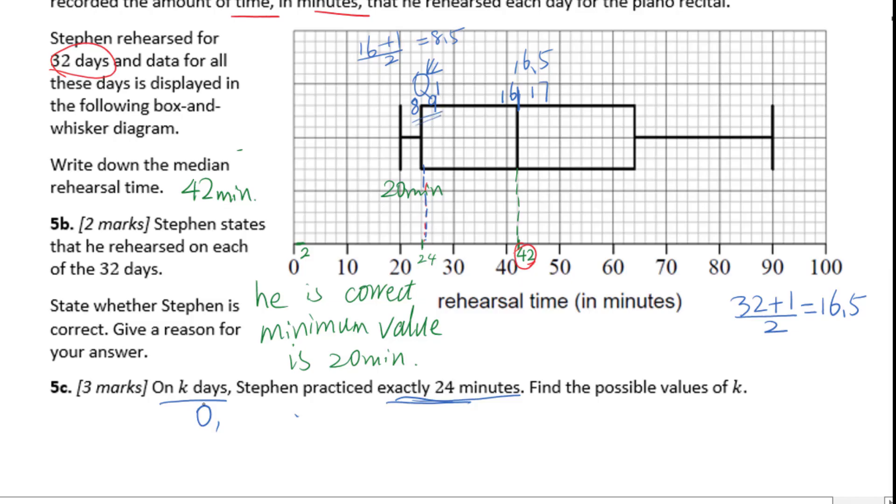It's possible to have 3, 4, 24 minutes. Then it could be the 16th data is also 24 minutes. There are at most 15 data whose values are 24 minutes. This is the answer for K.